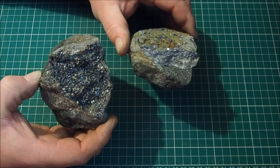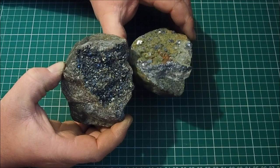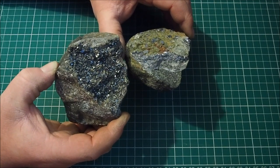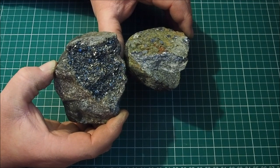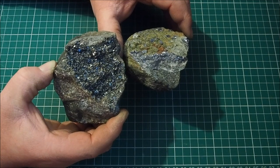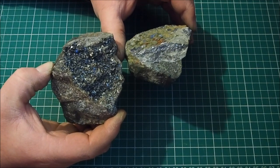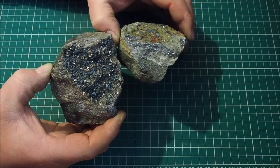So there you go, Galena, lead ore, Sphalerite, zinc ore. Hopefully you know a little bit more about those now. And we'll have some photos up in a minute, a bit of close up so you can see the crystal structure. Make it a bit easier to identify in the walls, okay?